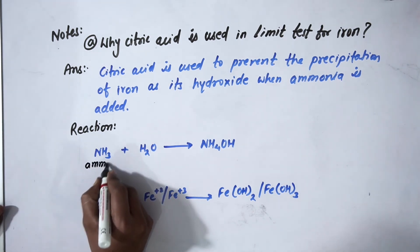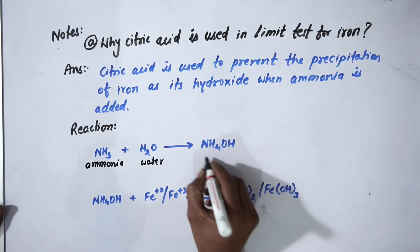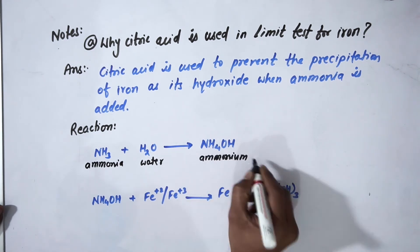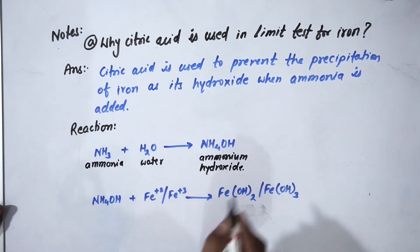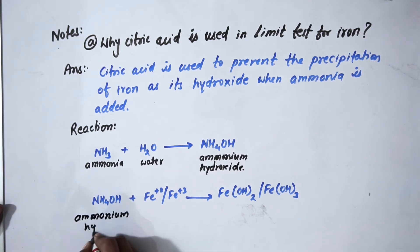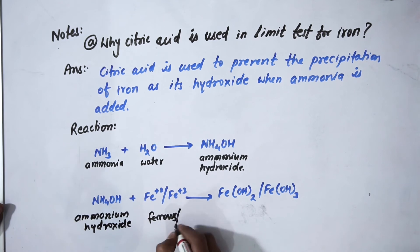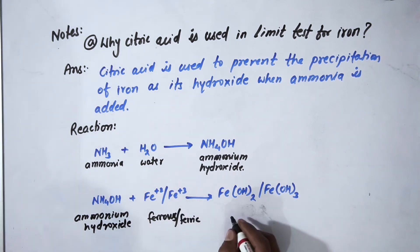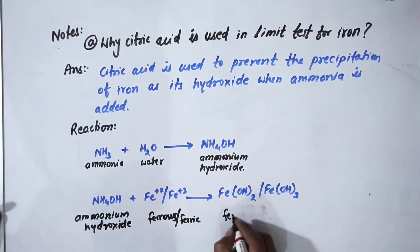The word names are: this is ammonia, this is water, this is ammonium hydroxide. This is ferrous or ferric iron, and this is the precipitate: ferrous hydroxide or ferric hydroxide.